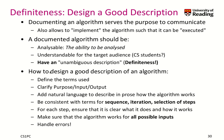How can we achieve a good description of an algorithm? First, define the terms used and clarify the purpose, input, and output. Add natural language prose to describe how the algorithm works. Be consistent with terms for sequence, iteration, and selection. Use some kind of pseudocode consistently for concepts. For each step, make sure it's clear what it does and how it works, and check that it works for all possible inputs. Also handle errors — for example, what happens if the car is already turned on? It hopefully shouldn't explode.